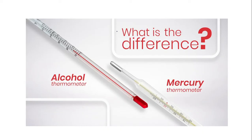Now we will look at the difference in the thermometric liquids used. Alcohol, shown as the red-colored liquid, is used as a thermometric liquid. Mercury, the silvery-white metal and the only liquid metal at room temperature, is a good conductor of heat and is used to measure higher temperatures. Here you can see the mercury thermometer, and the red-colored liquid is the alcohol thermometer.